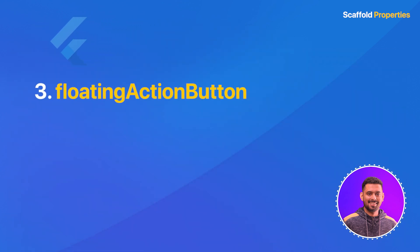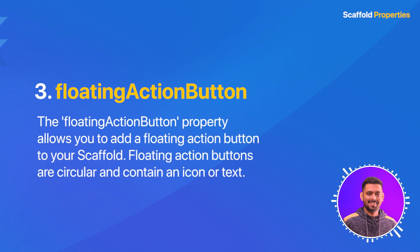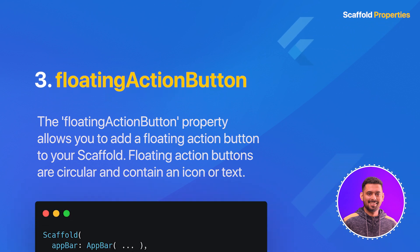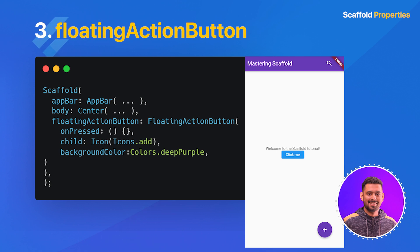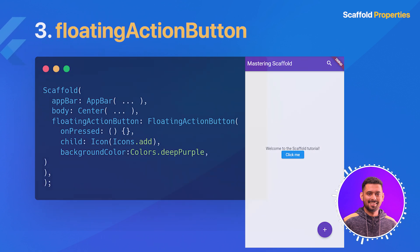Number three: floating action button. The floating action button property allows you to add a floating action button to your scaffold. Floating action buttons are circular and contain an icon or text. In this example, we have added a floating action button with an add icon and a deep purple background color.